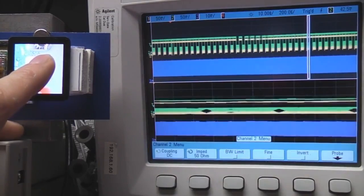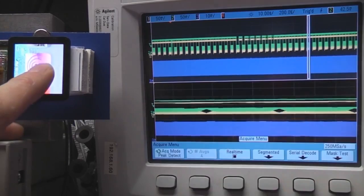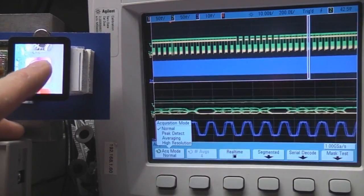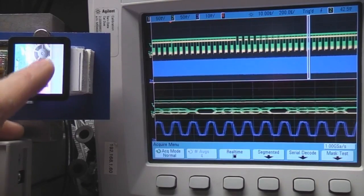So if we just turn another channel on, we're now back into our 'we can't see anything' mode. If I then change the acquisition mode to normal, we've now got our data back again because normal mode uses less memory per sample, so we've actually now got the information back.